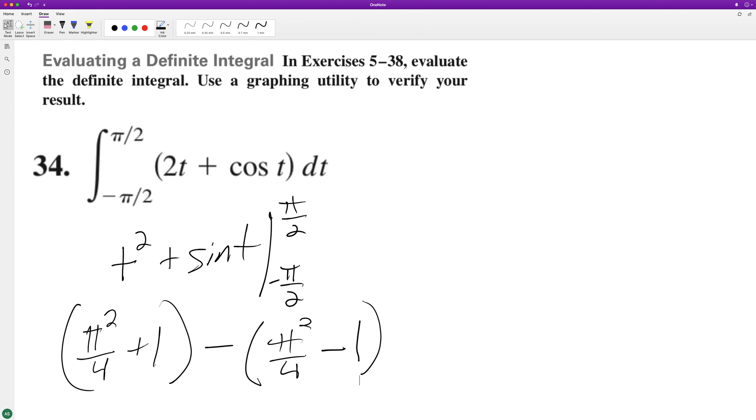So we distribute, so we get pi squared over 4 plus 1 minus pi squared over 4, and then distribute the minus sign. It cancels out the negative. We get a plus 1. So pi squared over 4 cancel out, and we're simply left with 2.